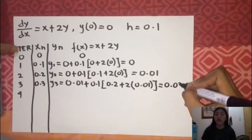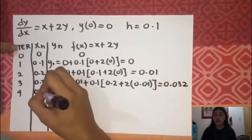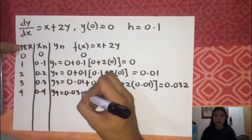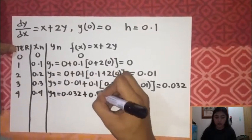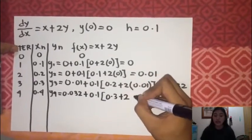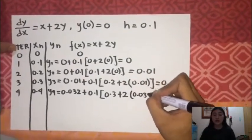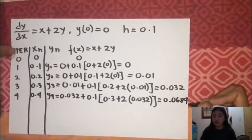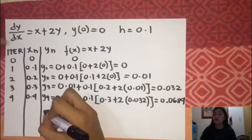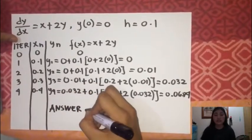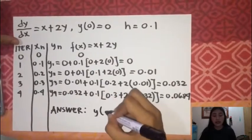We are trying to find the approximate value of y of 0.4. That's why we stopped at the fourth iteration. When we reach y of 0.4, then the given answer is the value that we are looking for. In this sample problem, the approximate value of y of 0.4 is 0.0684.